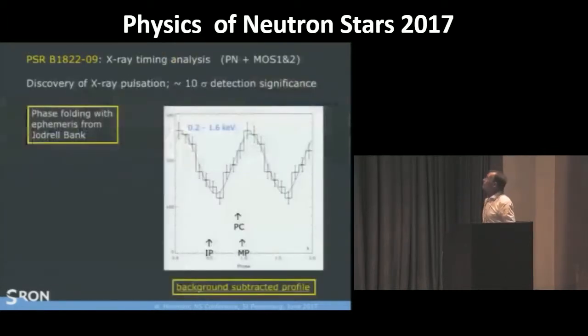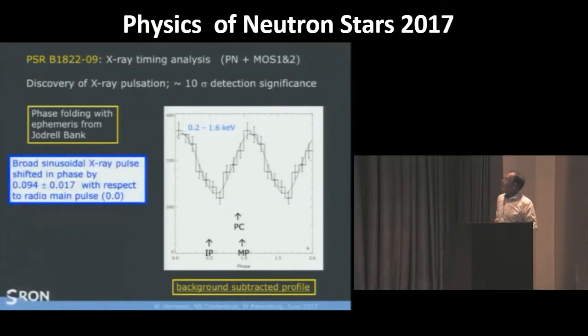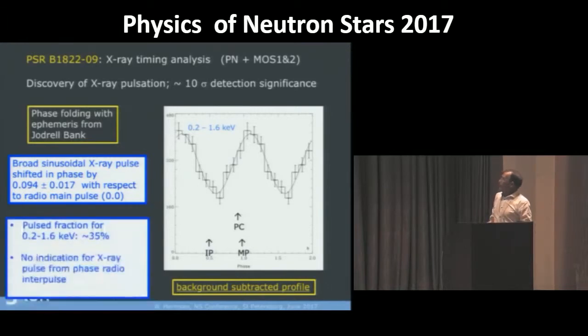We also discovered for this source pulsations that is shown here. And this is again a broad profile. You have here the main pulse, the precursor position and the interpulse position. This is background subtracted, there is no background. These are all counts from the pulsar. As you see, it's broad. And the X-ray pulse is lagging by 0.1 in phase. The pulse fraction over this total X-ray range, 0.2 till 2 keV, is 35%. So 35% is in this pulse and the rest is below.